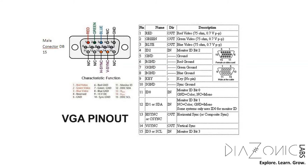For example, the first pin is used to transfer the color red, the second pin is for green, and the third pin is for blue respectively. Red, green, and blue are primary colors in the color palette, and any bit of video signal transferred will be a combination of red, blue, and green.